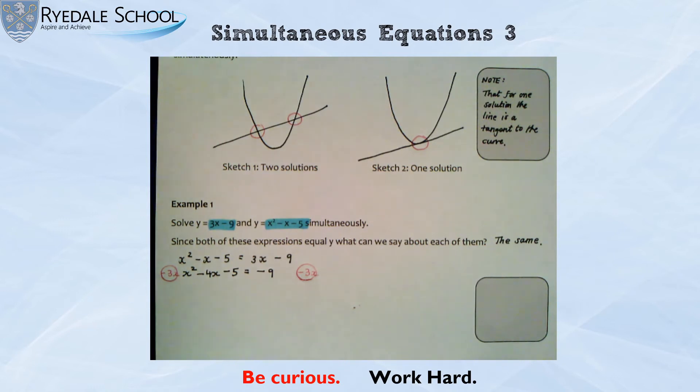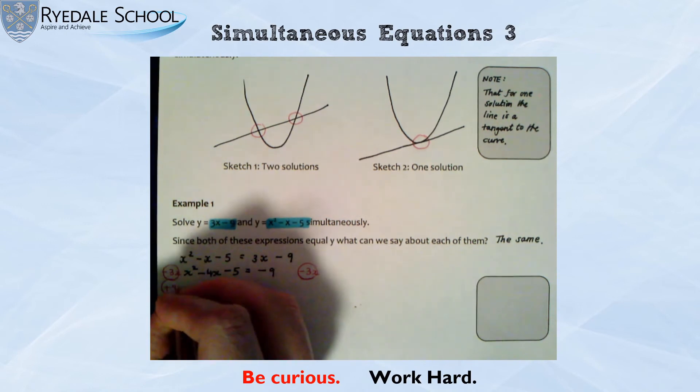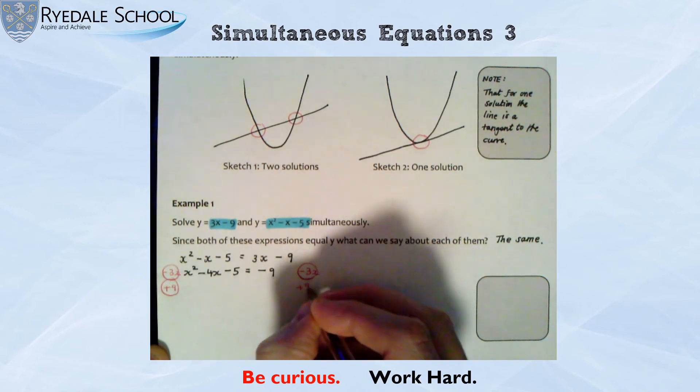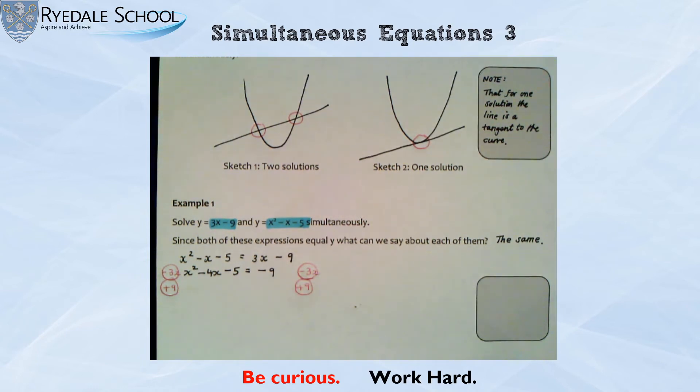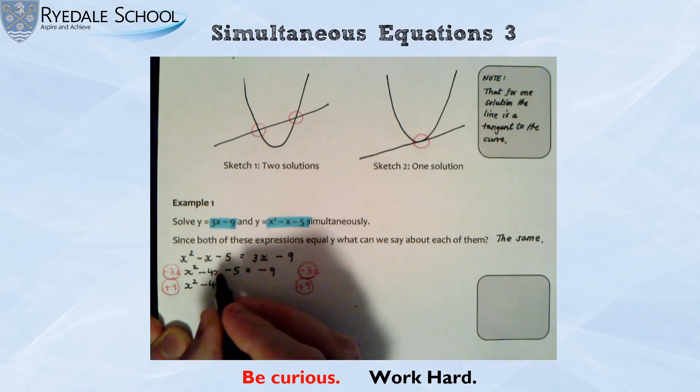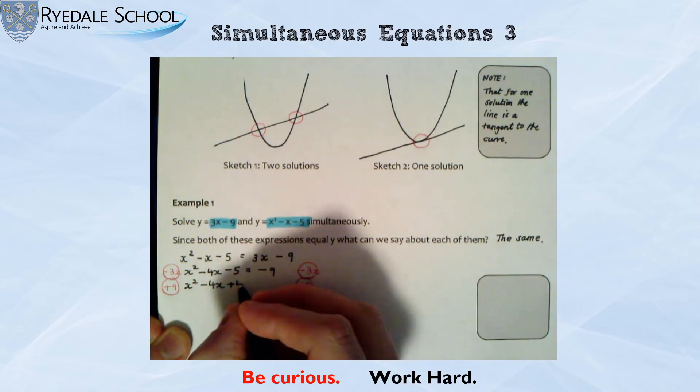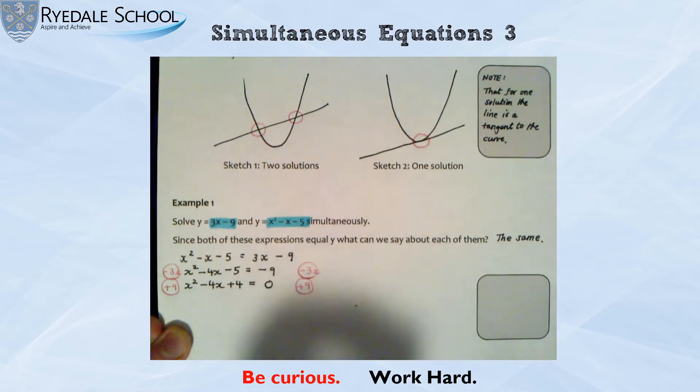Now, to make that side equal zero, I'm now going to plus 9 to both sides. And when I plus 9 to both sides, let's just check this. I get x squared, take away 4x. Adding 9 there will give me plus 4 equals zero. And there is the quadratic equation that I can now solve and work out the values of x.